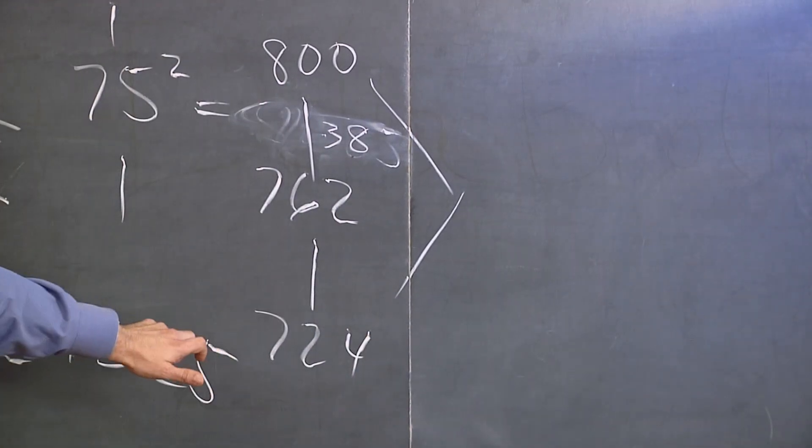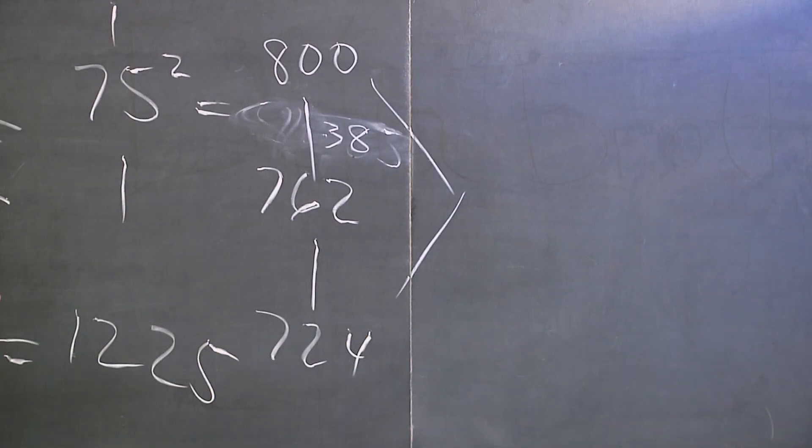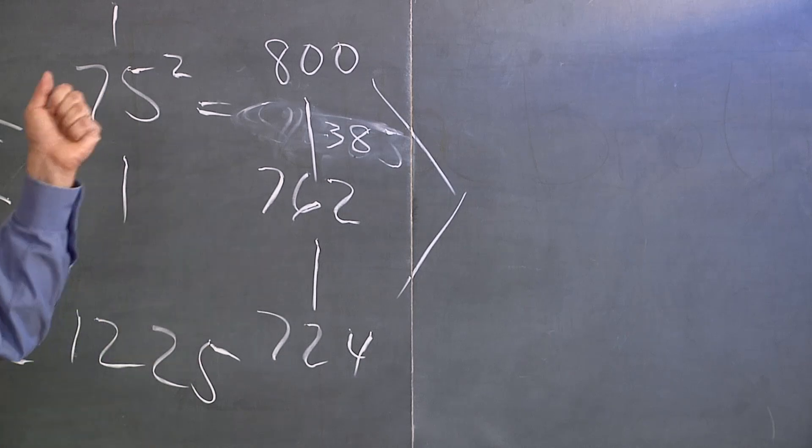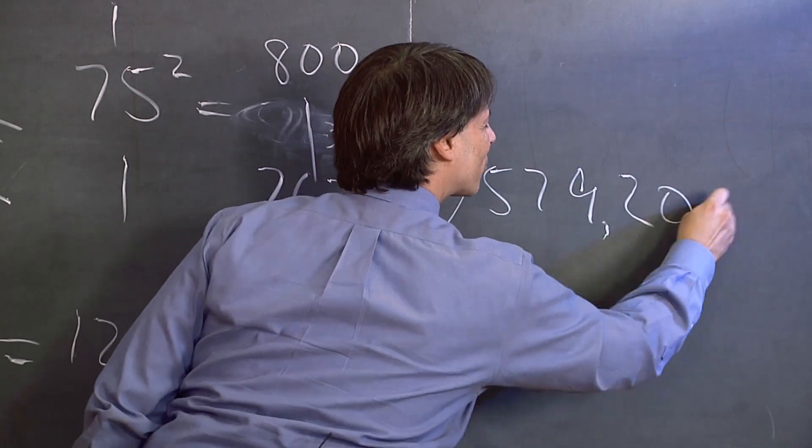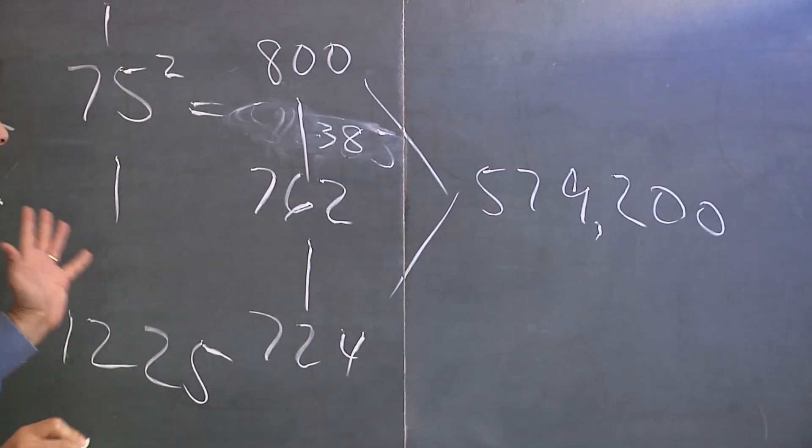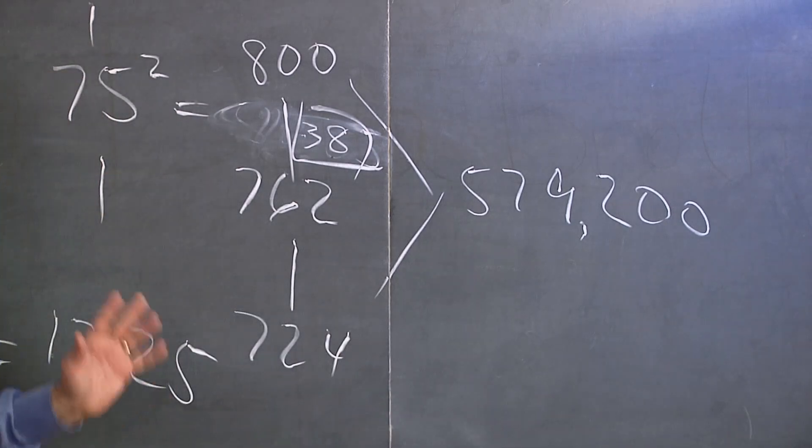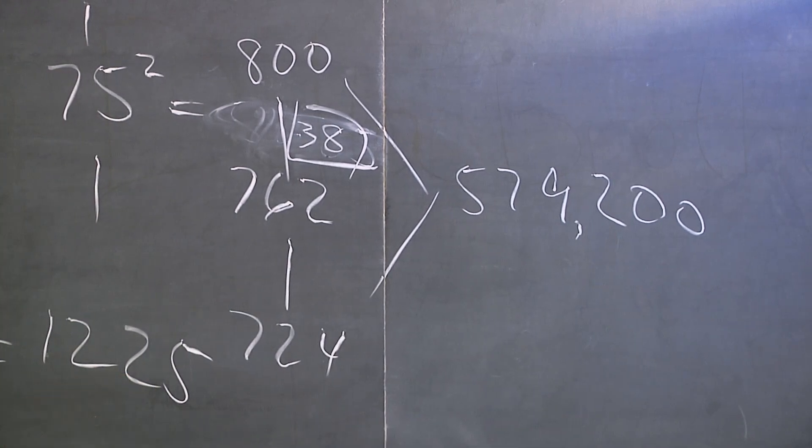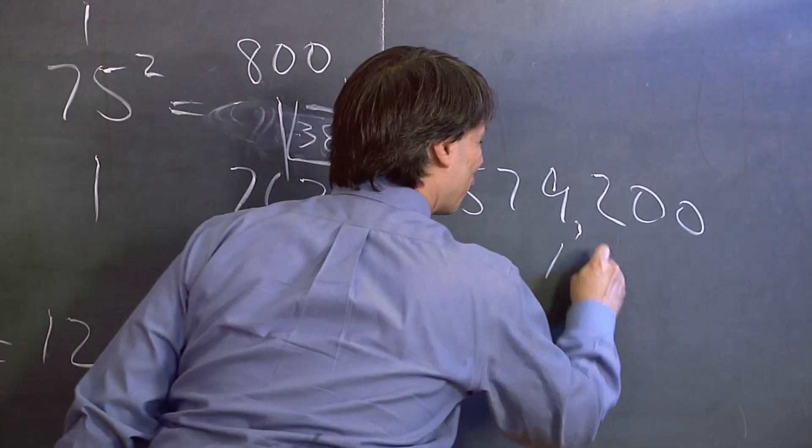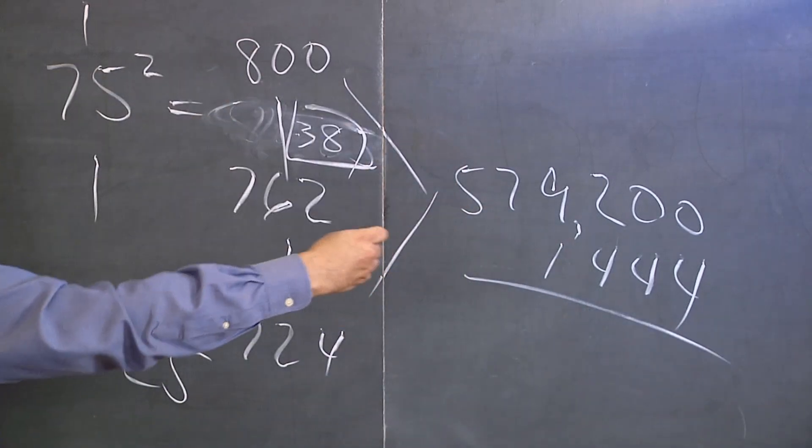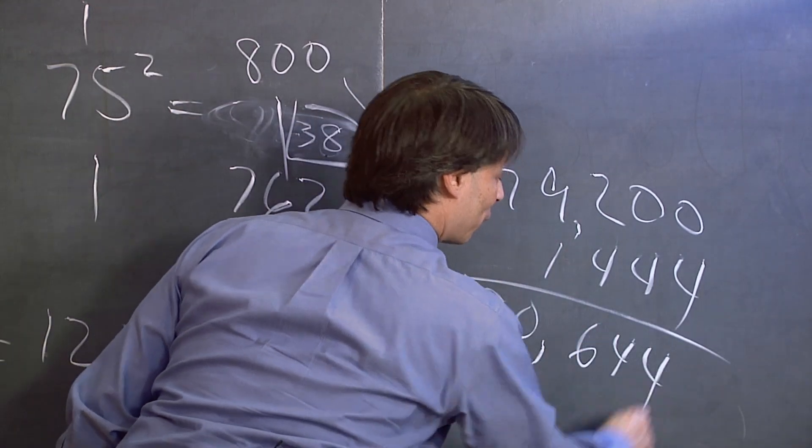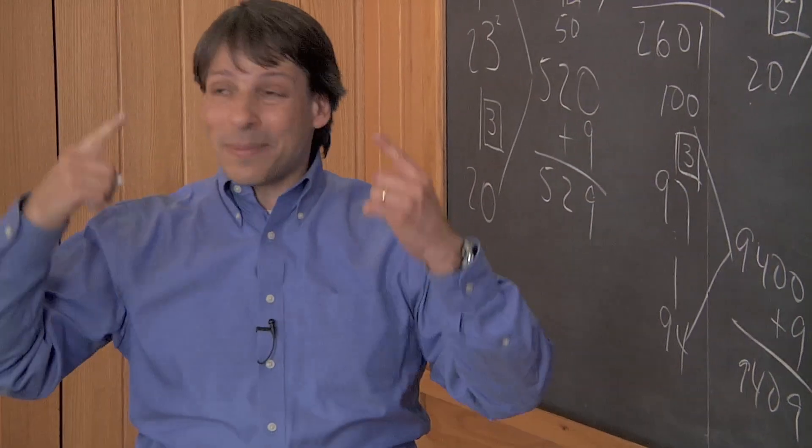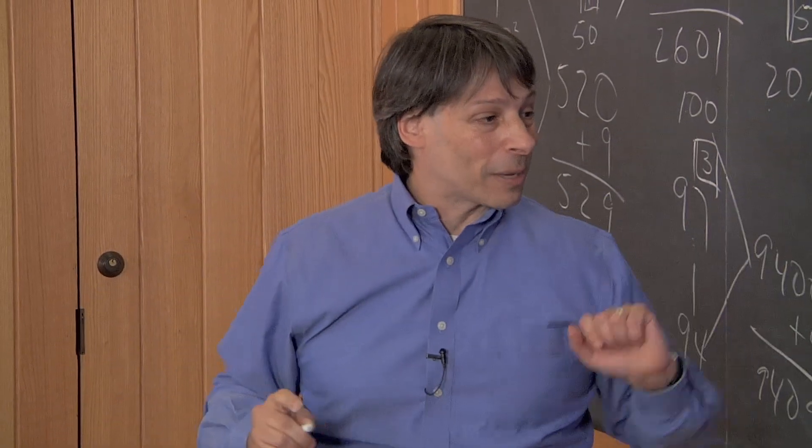I do 800 times 724. Let's see. 8 times 700 is 5600. 8 times 24 is 192. 5600 plus 192 is 5792, so that's 579,200. Add to that the square of 38. And since I've been doing these for a very long time, I know 38 squared is 1,444. Add those together from left to right to get 580,644. And that's exactly what I was doing in my head when I was solving that problem.